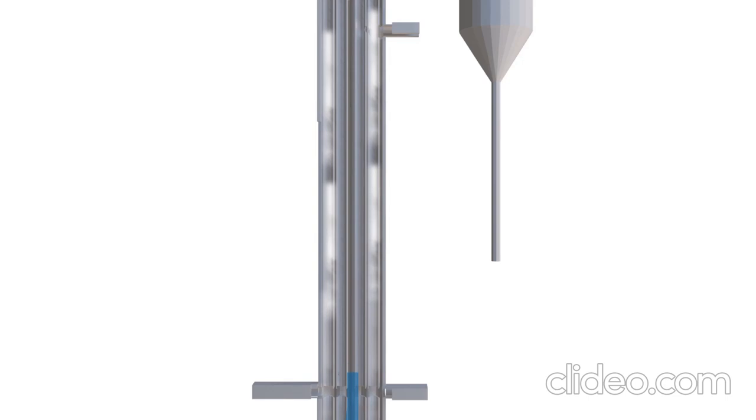The liquor to be evaporated is introduced into the bottom of the tube, a film of liquid forms on the walls and rises up the tubes, hence the title Climbing Film Evaporator.